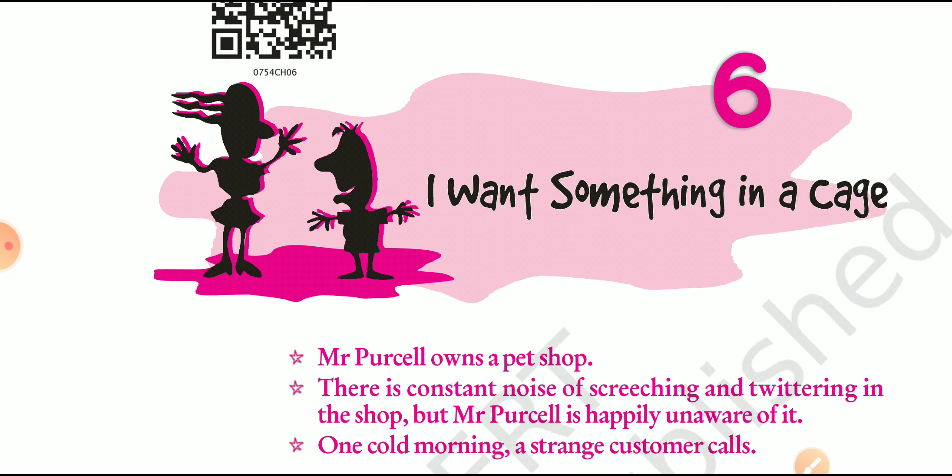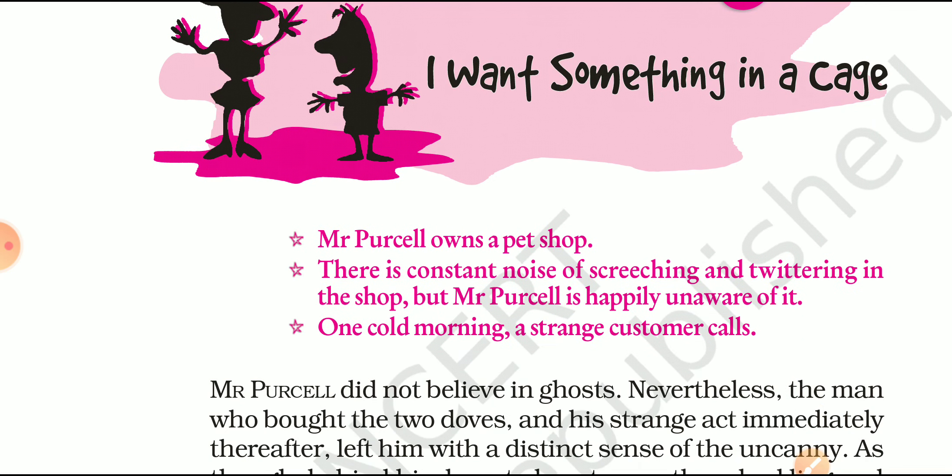He went to a pet shop to buy an animal, and the shop owner's name was Mr. Purcell. The description of Mr. Purcell given in the chapter is that he is a very short-heighted person — it seems like he has put a melon in his belly, meaning his belly was that fat. He was wearing glasses which made his eyes look much bigger, so he looked as if he were an owl. He is also described as a very cheerful, jolly kind of person, which suits a shopkeeper who wants to attract customers.